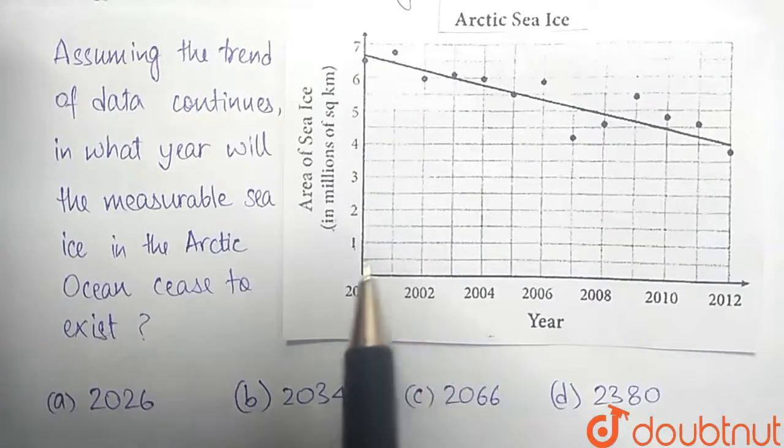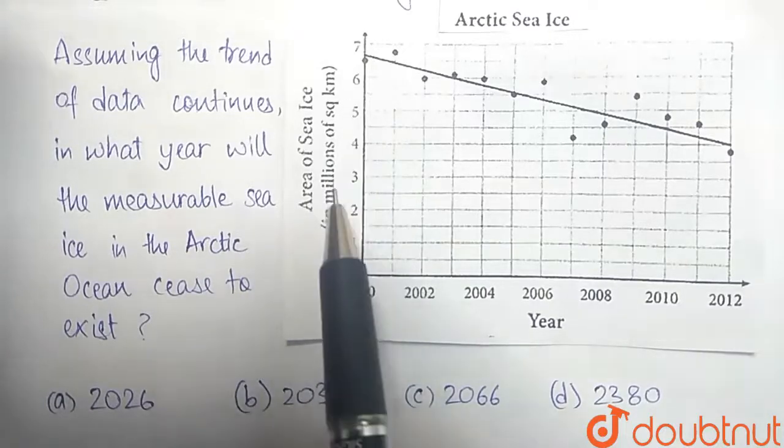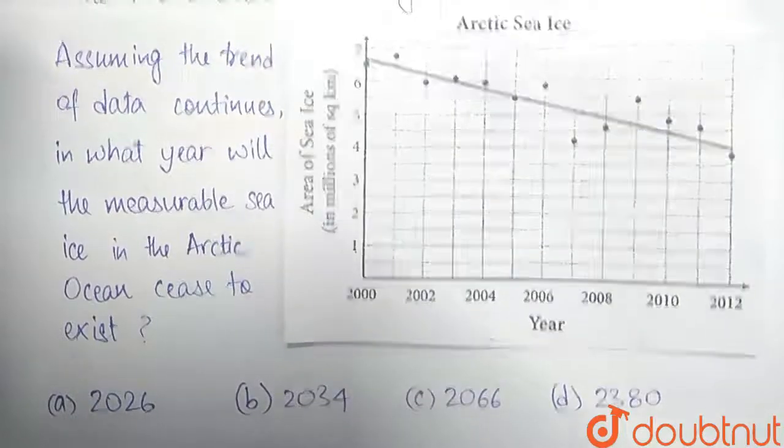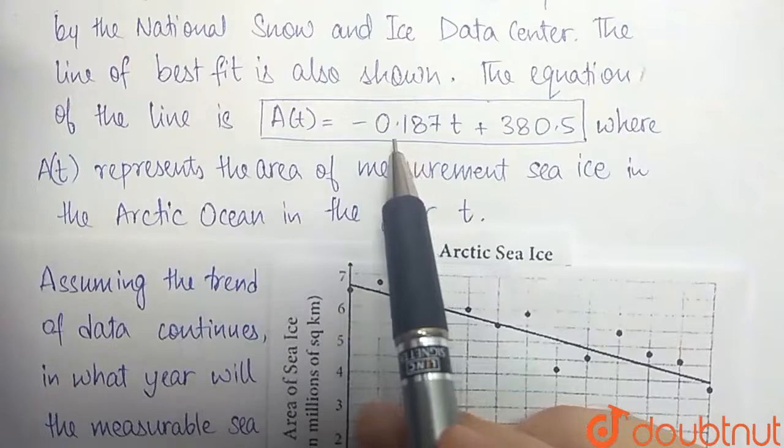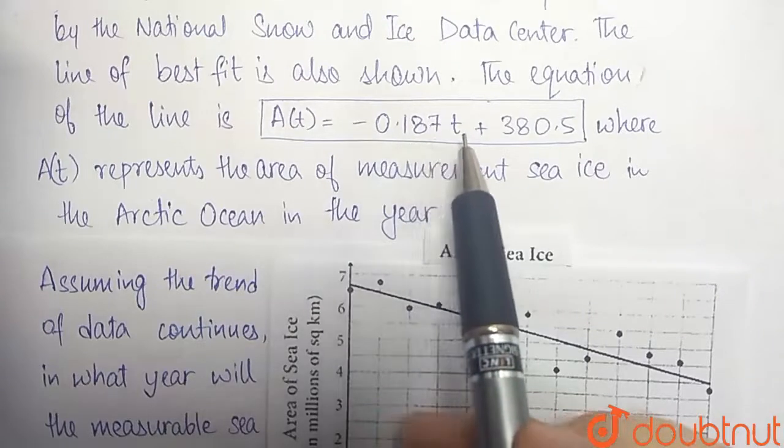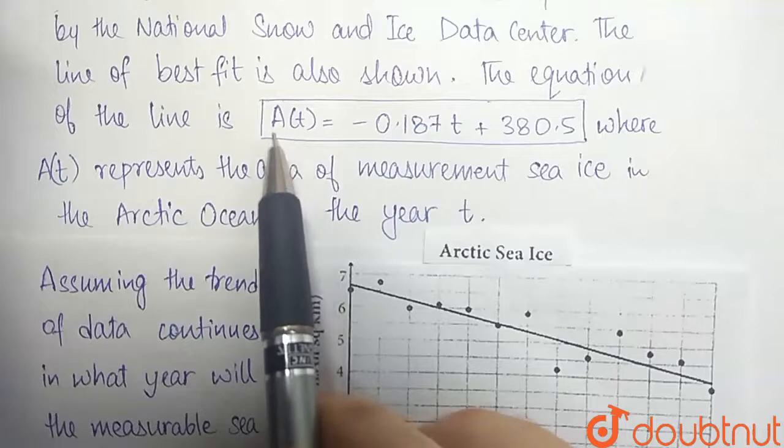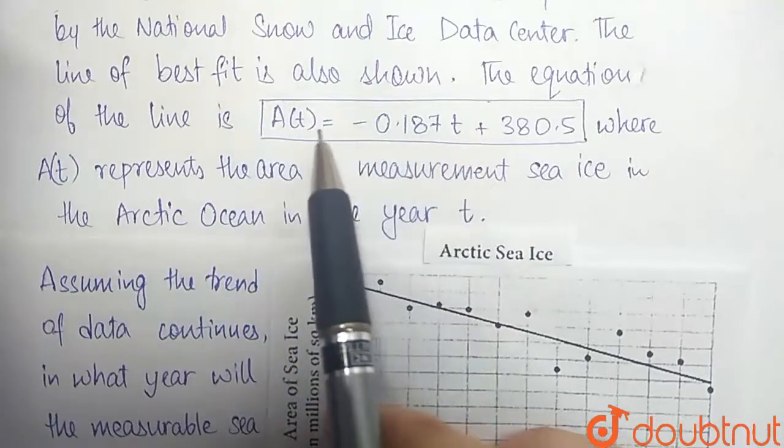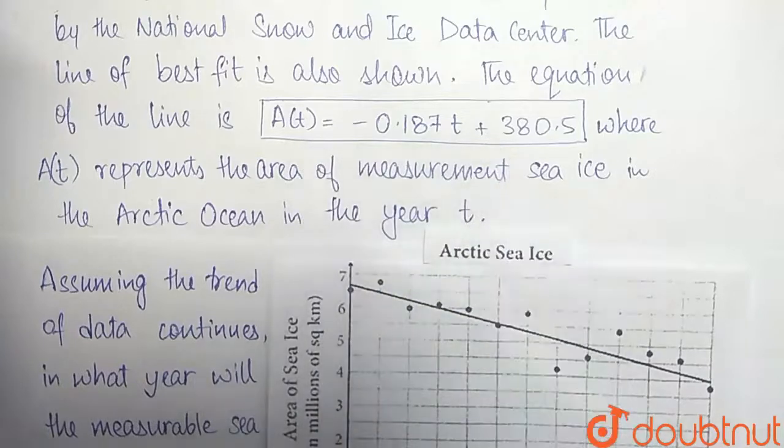So what we need to find out is the year when A(t), the area of sea ice in millions of square kilometers, becomes 0. We already have the formula for this line of best fit: A(t) = -0.187t + 380.5. Using this formula, we can substitute 0 here in order to get that year where the area of sea ice in Arctic sea ceases to exist or becomes 0.